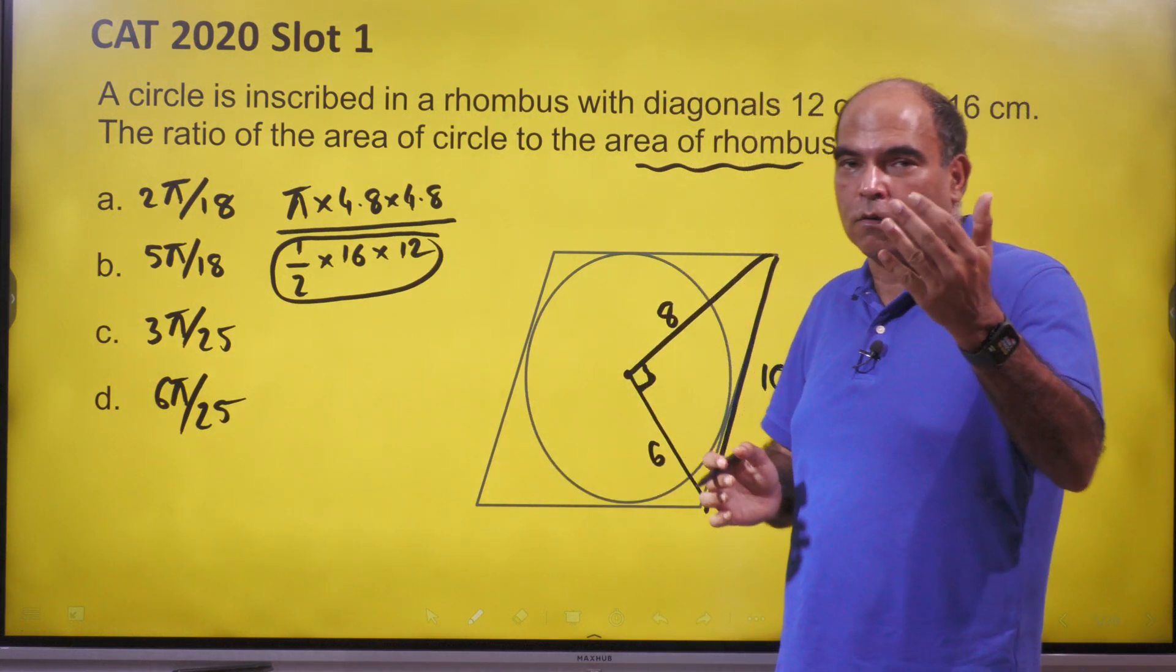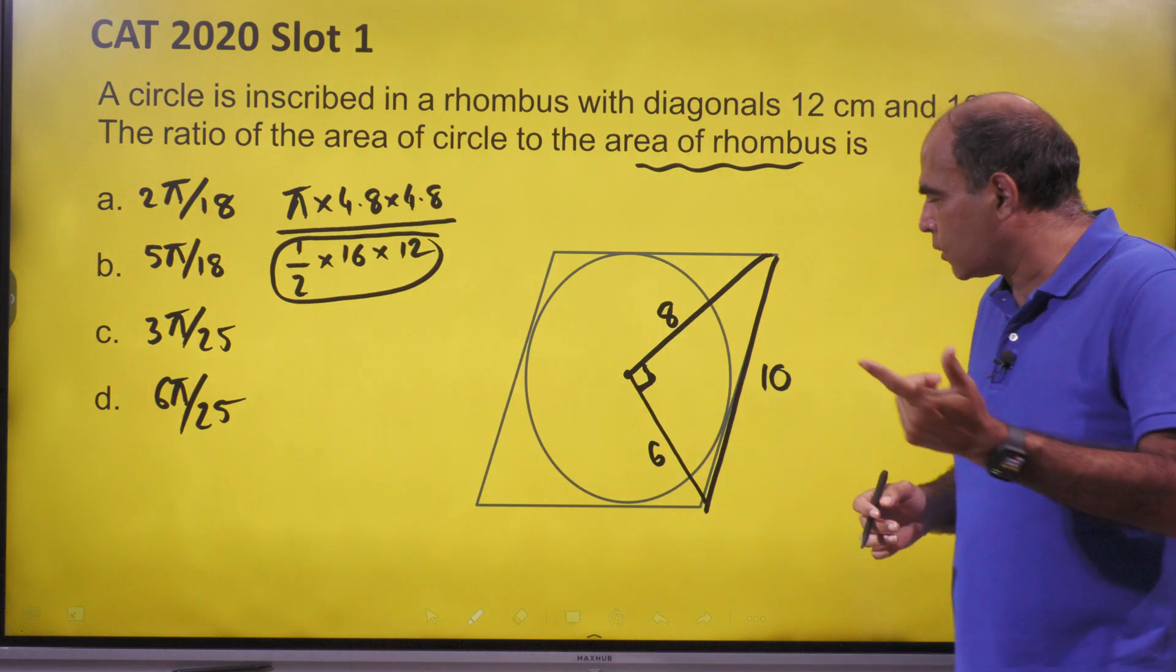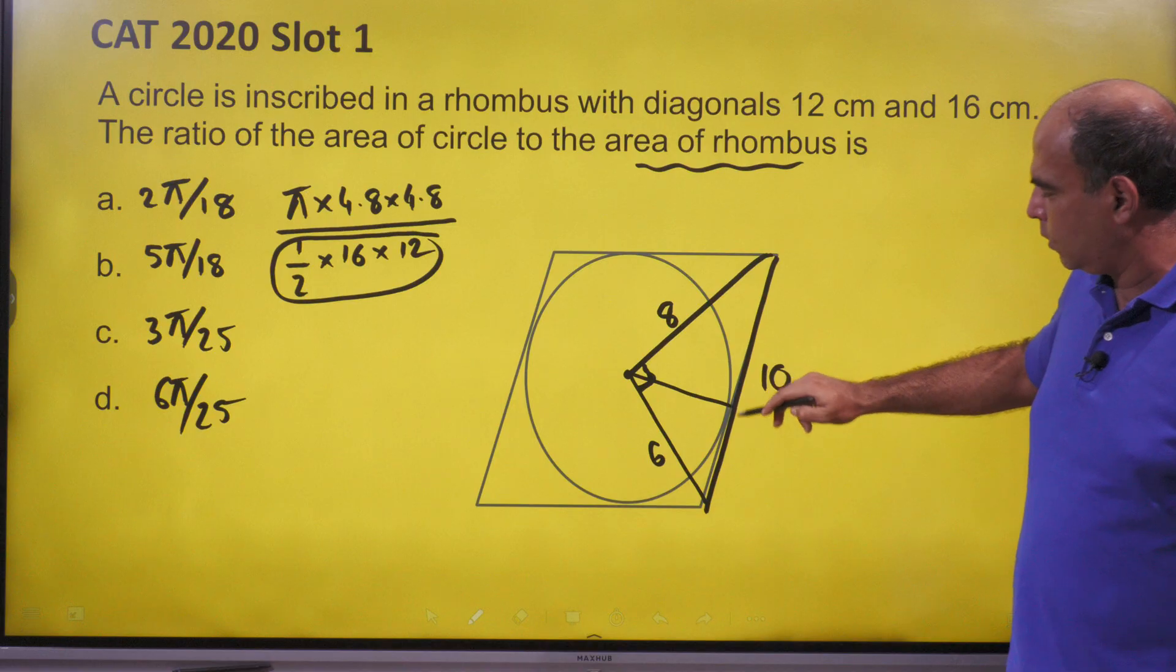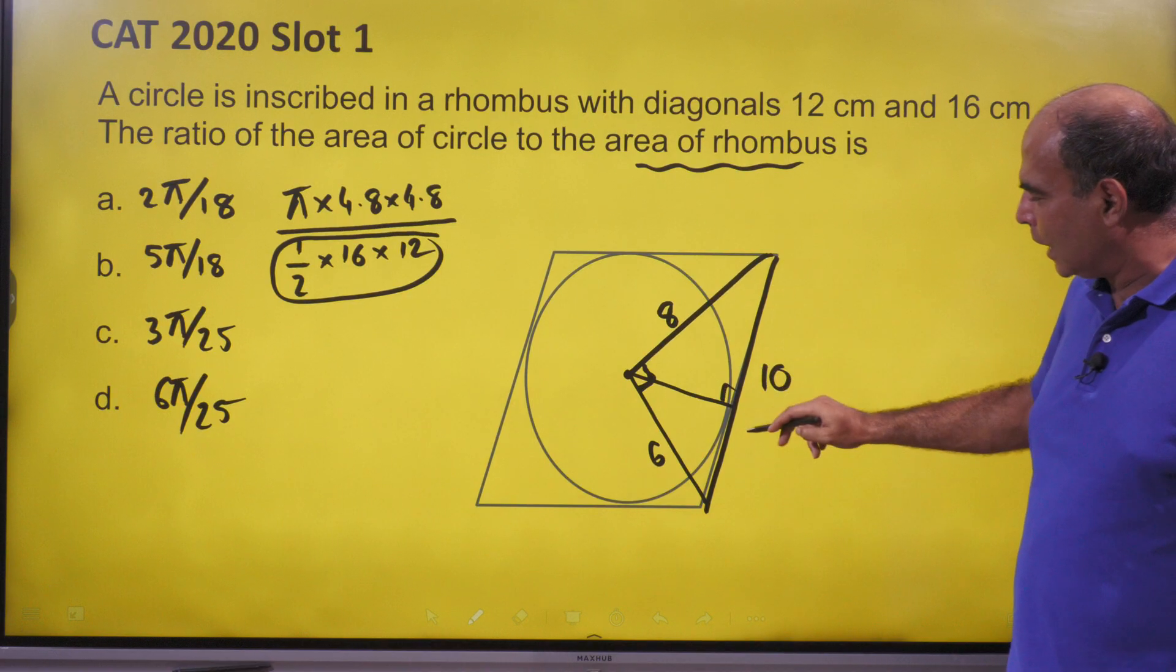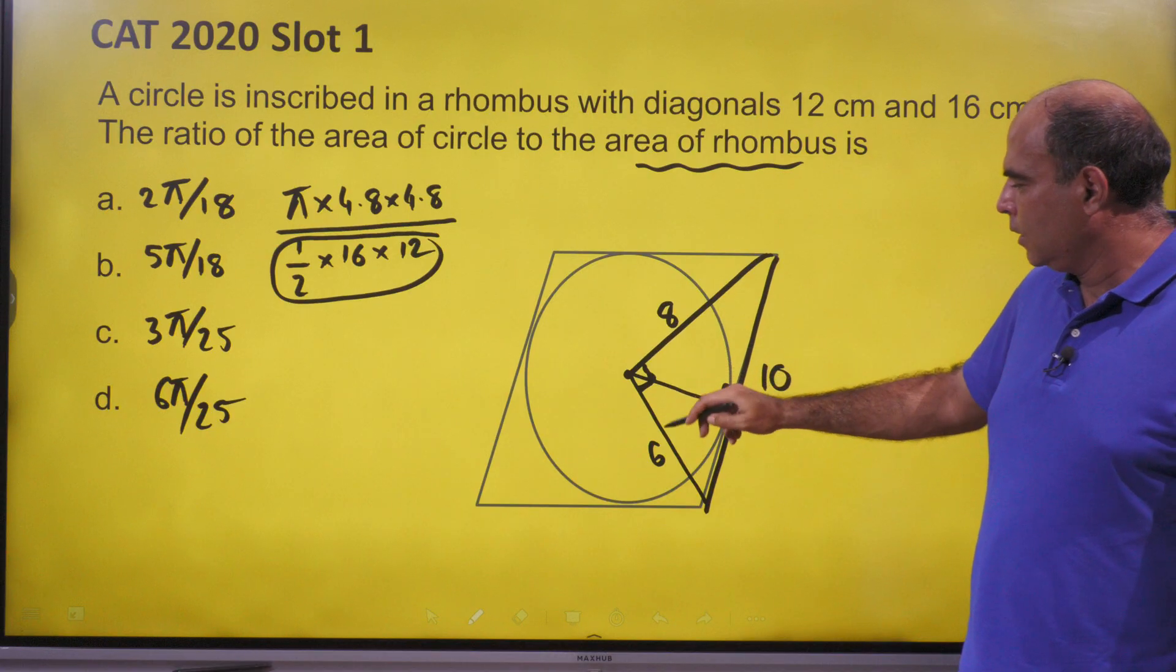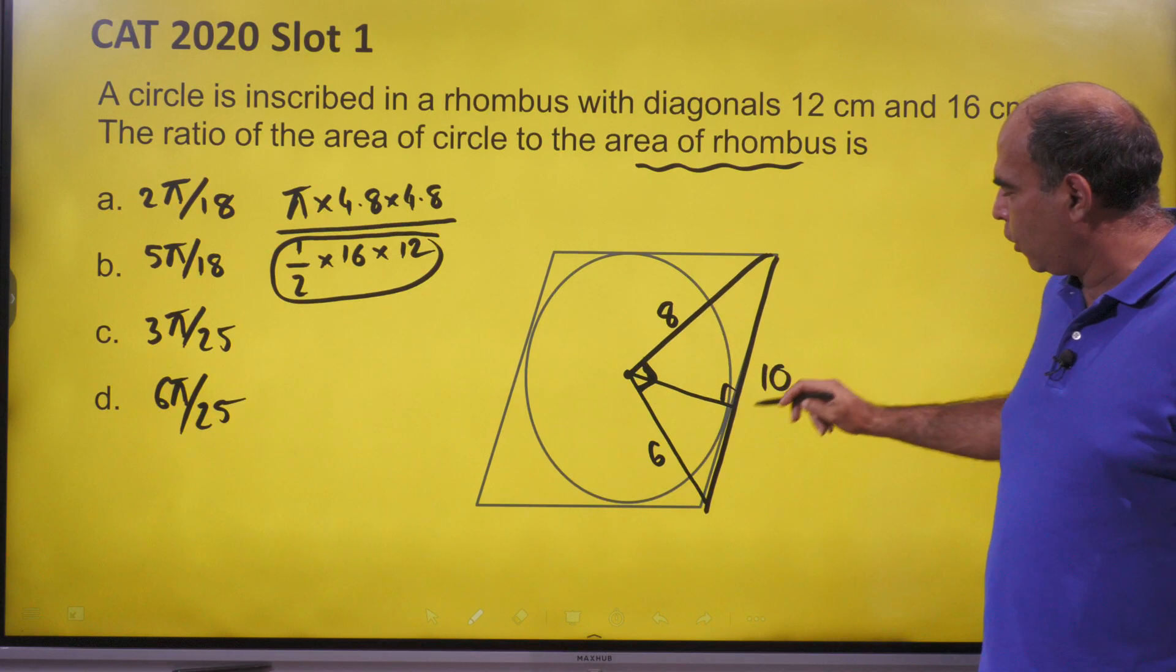Area of circle is always πr², so I need r. The construction required is: if I draw the perpendicular from here, because this is a tangent, this will be perpendicular. This triangle has base times height of 6 × 8, or base times height of 10 times the radius.